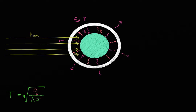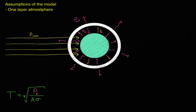Our goal in this video is to use a simplified model of Earth's atmosphere to calculate the temperature of Earth's surface. So let's take a look at our model. We have this one layer of gas — we're just thinking of the whole atmosphere as just one layer of gas that acts as a unit.